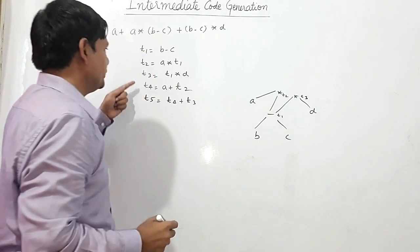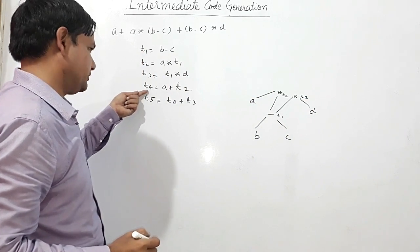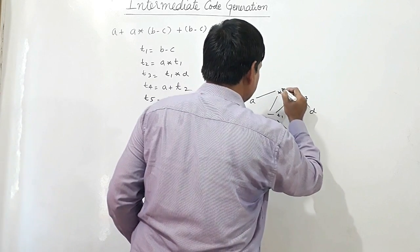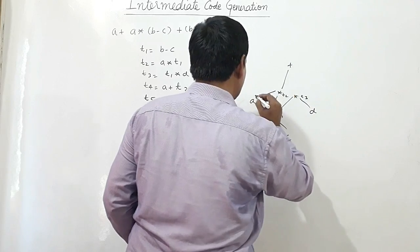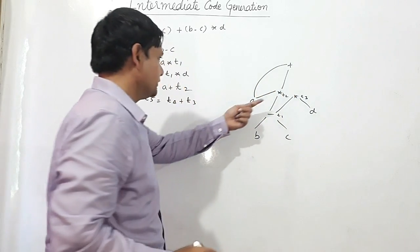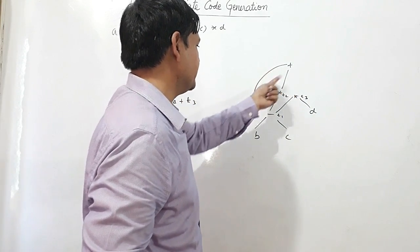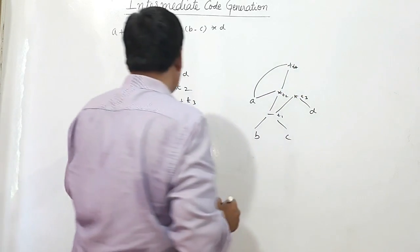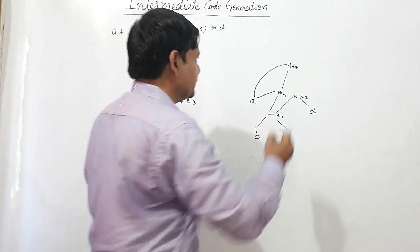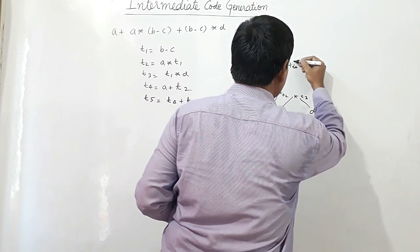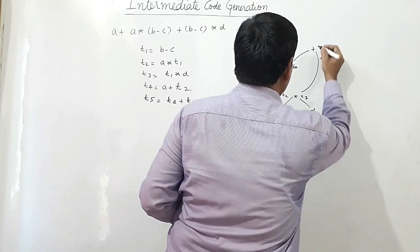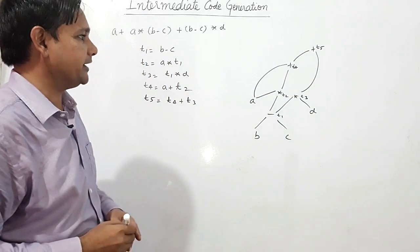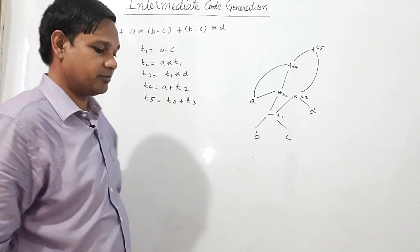So now t4 is containing a + t2. I am taking the result of t2 and adding it with a, so its result is in t4. Now t5 is t4 + t3. t4 is here and t3 is here, giving t5. So this is the directed acyclic graph for this expression.